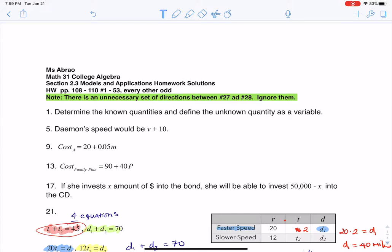Hey Math 31, I had a question coming out of section 2.3, number 17, and this was when we had a woman who had $50,000 to invest.